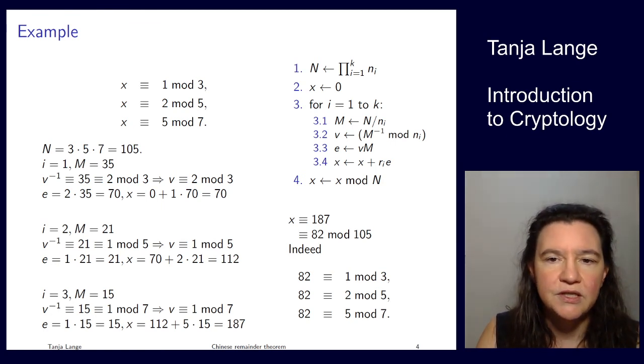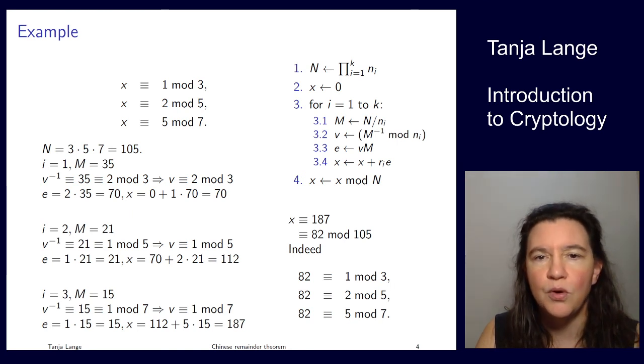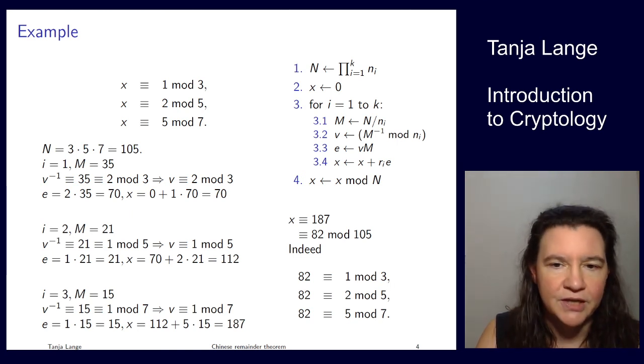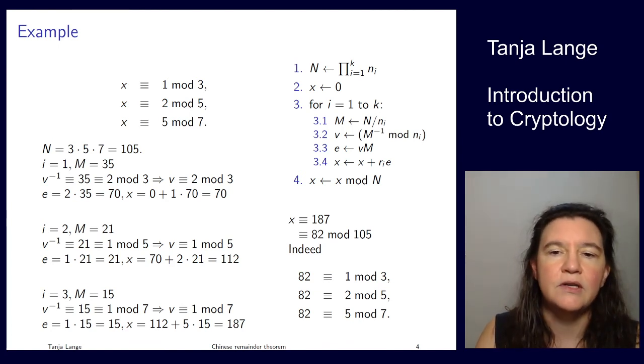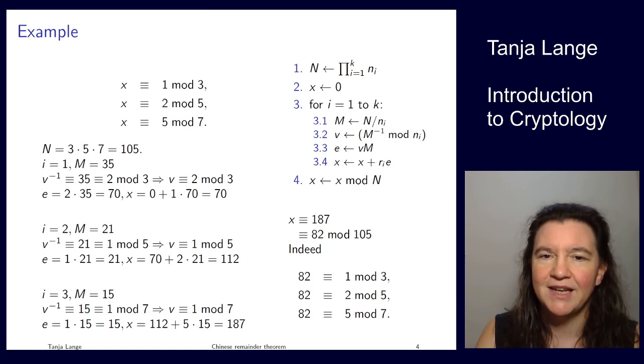Now 82 is between 0 and 105, so that is the smallest solution. Let's double check that it actually satisfies the congruences. 82 is 1 larger than 81, so it's 1 mod 3. It's 2 larger than 80, so it's 2 mod 5. And 77... so that's 5 mod 7. OK.